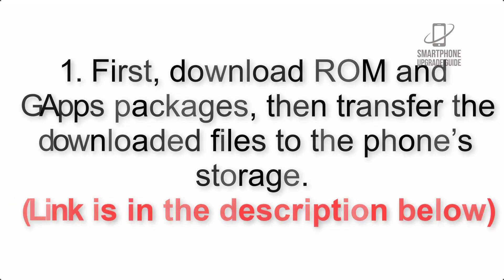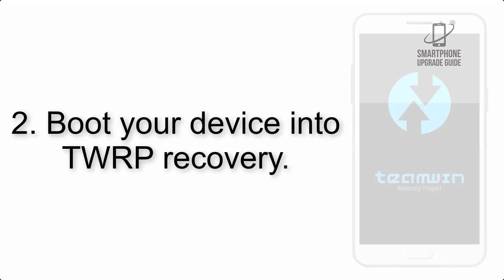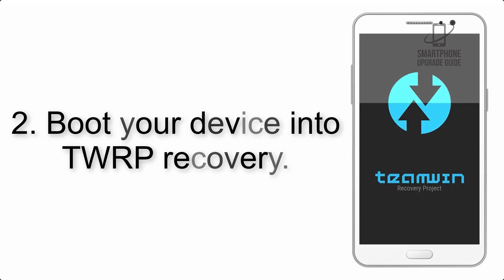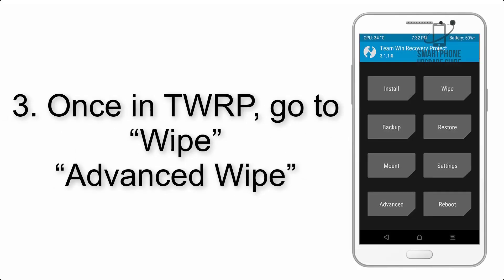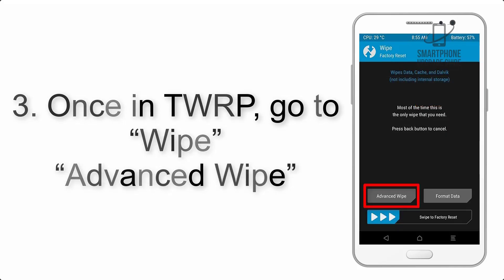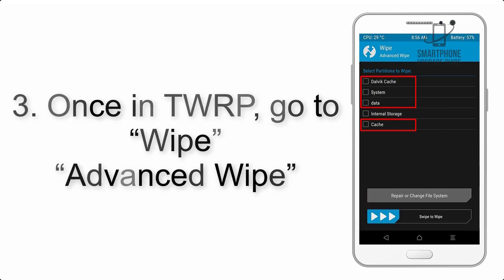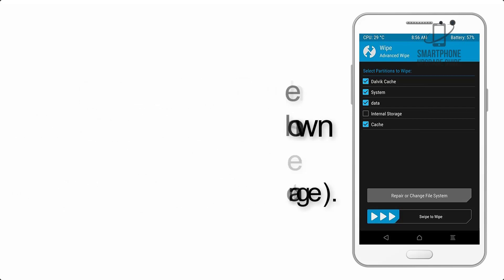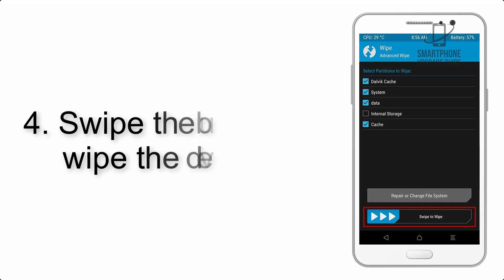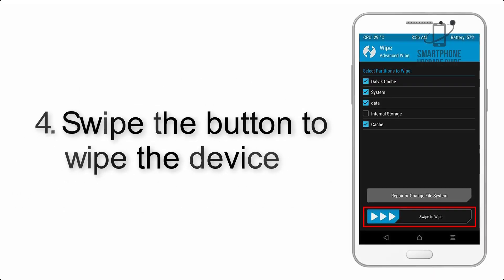Step 2: Boot your device into TWRP recovery. Once in TWRP, click on Wipe, then Advanced Wipe, and select the checkboxes as shown in the image, excluding internal storage.